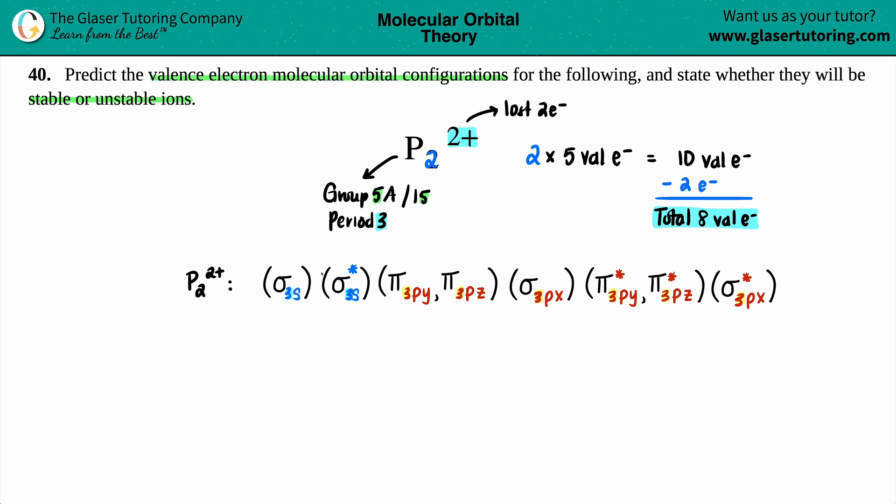So just notice that your antibonding is always higher in energy than its bonding equivalent, right? These go together. One's bonding, one's antibonding. This and this go together. One's bonding, one's antibonding. And then this and this go together. One's bonding, one's antibonding.